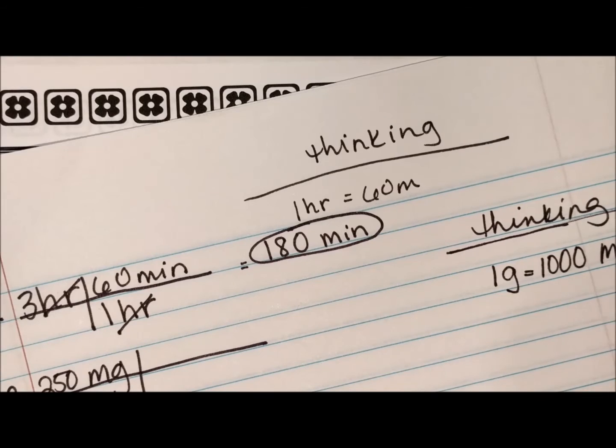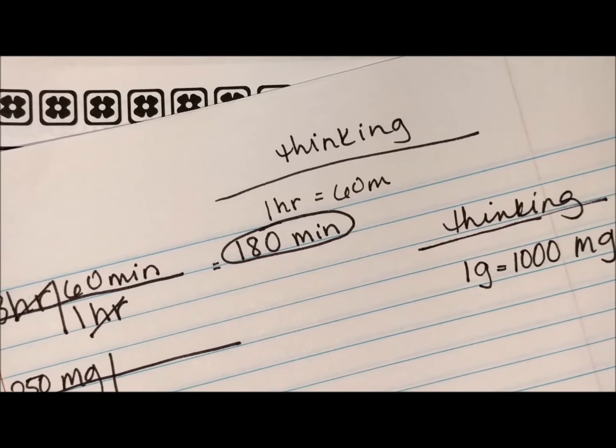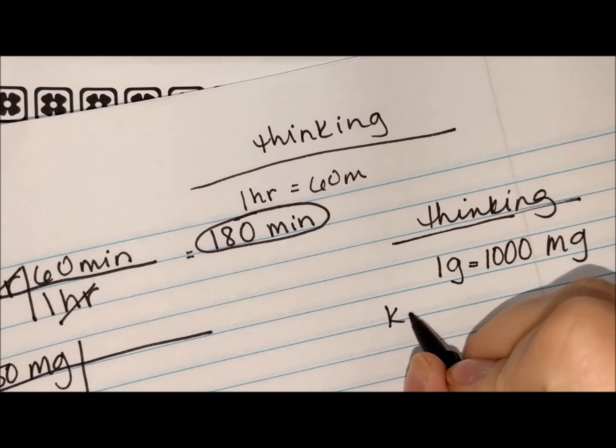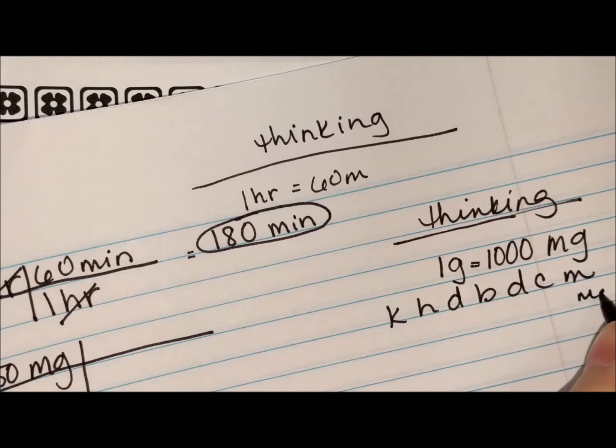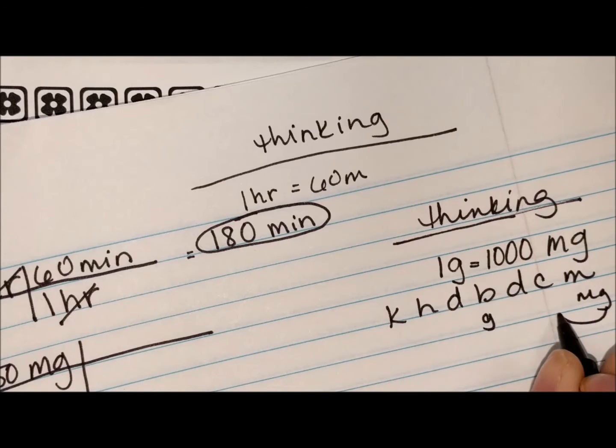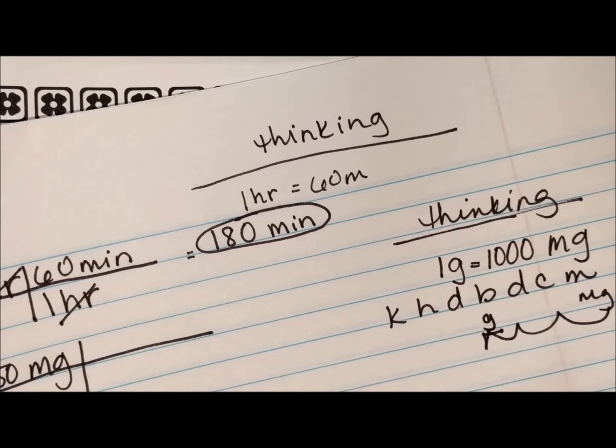And I know that because of King Henry. King Henry Died By Drinking Chocolate Milk. Milligrams is here and grams is here, and that is one, two, three spots away. That means there's one thousand little ones in one big one.